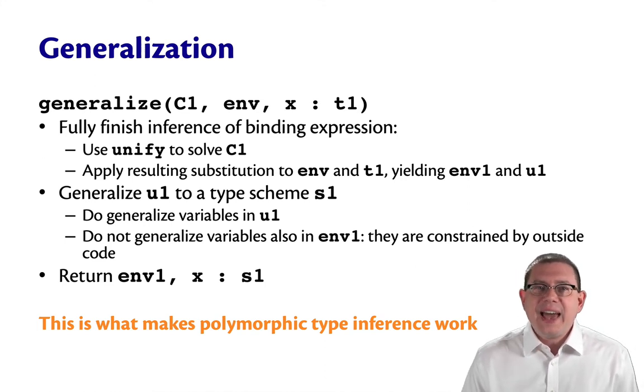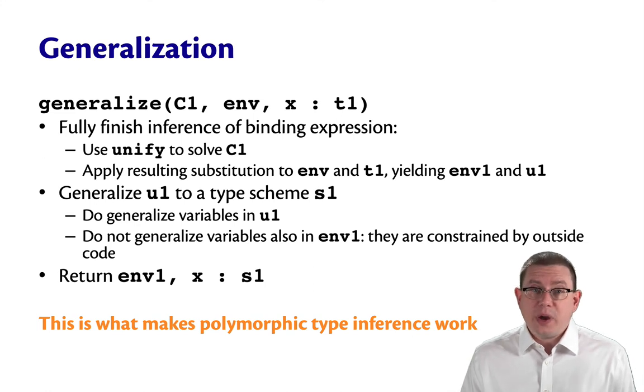This is what makes polymorphic type inference work. This is, in a way, the essence of HM type inference. That it does this generalization to type schemes at let bindings. And so sometimes this way of doing type inference is referred to as let polymorphic.